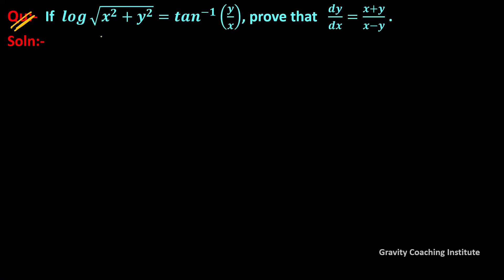Question: If log under root x square plus y square equal to tan inverse y upon x, prove that dy upon dx equal to x plus y upon x minus y. So here the equation is log under root x square plus y square equal to tan inverse y upon x.